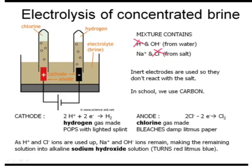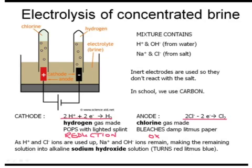Sodium hydroxide is an alkali, and it can be tested by the fact that it turns red litmus blue. Finally, we can think of electrolysis as being a redox reaction. Looking at the two half equations at the cathode and the anode: at the cathode, hydrogen ions are gaining electrons to make hydrogen gas — reduction is gain, so this reaction involves reduction. At the anode, chloride ions each lose electrons to make chlorine — oxidation is loss, so this describes oxidation happening at the anode.